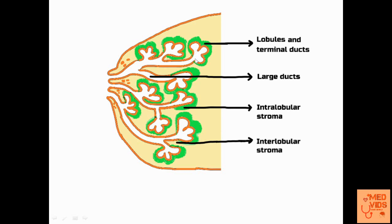A lobule is nothing but a collection of multiple acini along with their terminal ducts. Multiple lobules will open their ducts into the large duct, which is the second part. The large duct is formed by the opening of multiple terminal ducts, and is also called the lactiferous duct.